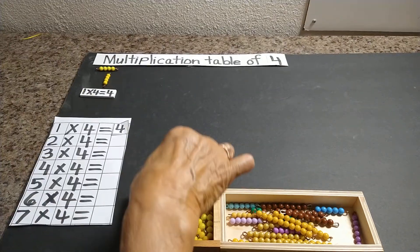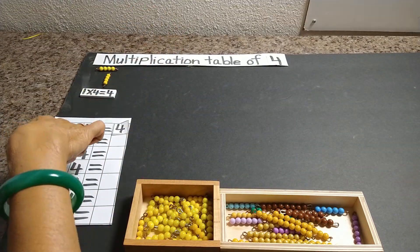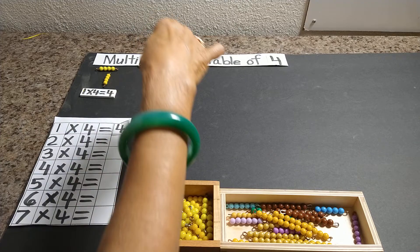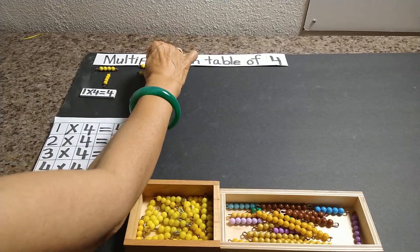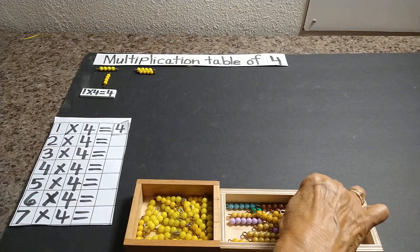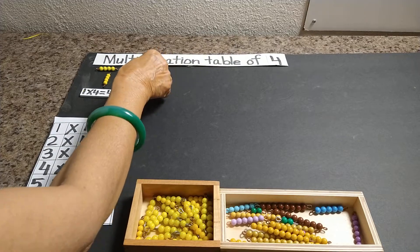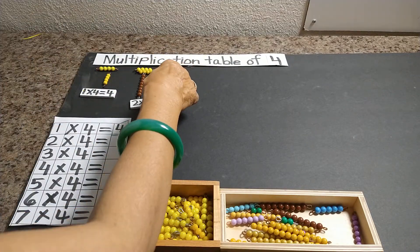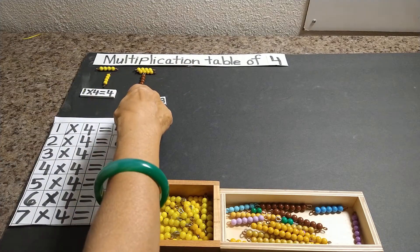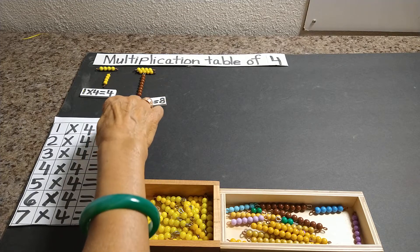So 2 times 4. 1 times 4. 2 times 4 is 8. So I'm going to place number 8 here also.